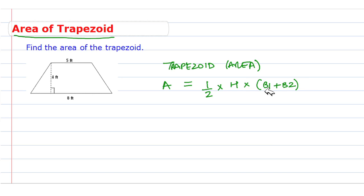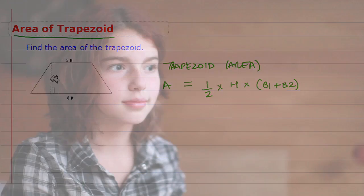Let me explain what base 1 plus base 2 is. So in this case, height is this one. This is height. Pretty cool.